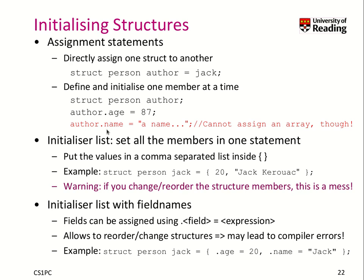How do you initialize a structure? You can assign one structure to another. We declare and define the structure variable — here we have author as a new variable and we assign it immediately with the values of Jack. We can also declare the variable and then initialize one member at a time, like author.age equals 87. But when we try to assign an array, we know we cannot assign an array directly. So we cannot say author.name equals something — that doesn't work. We have to use our copy function.